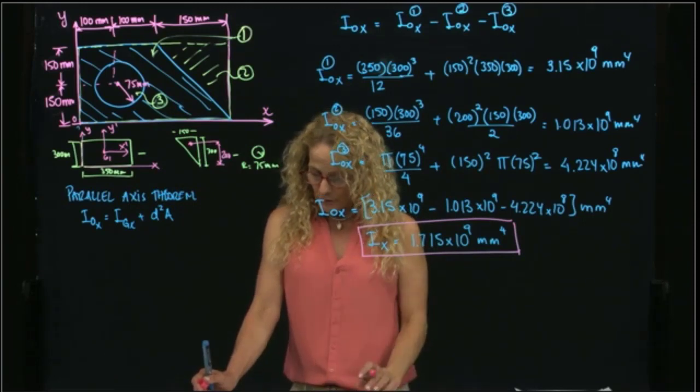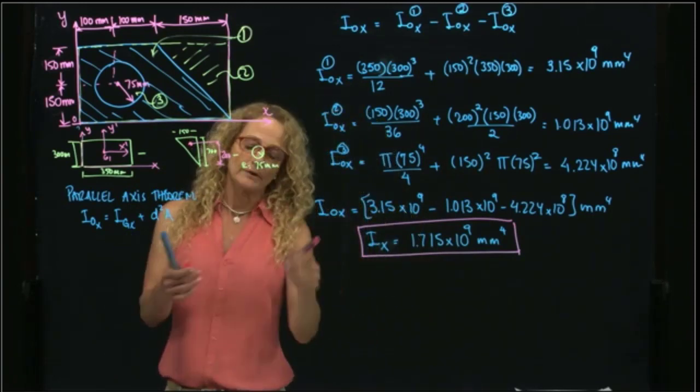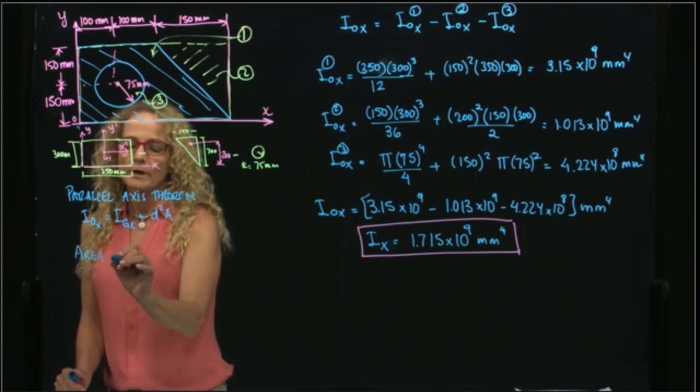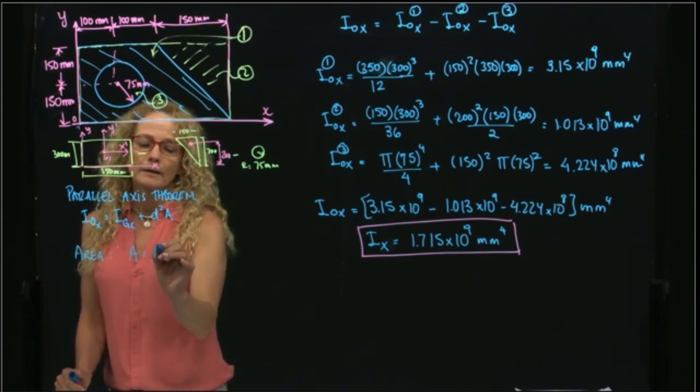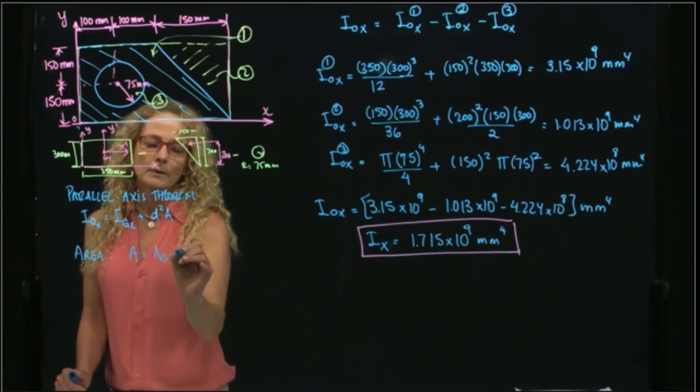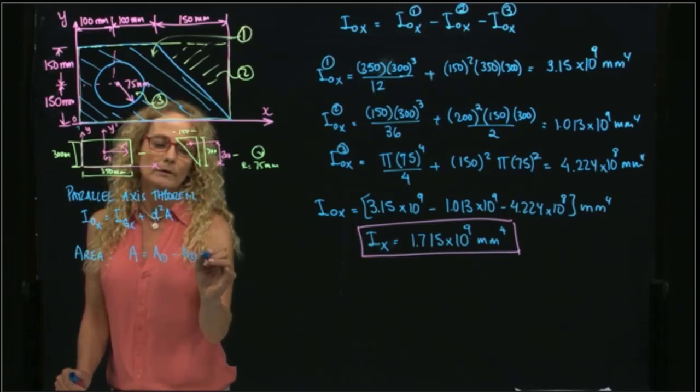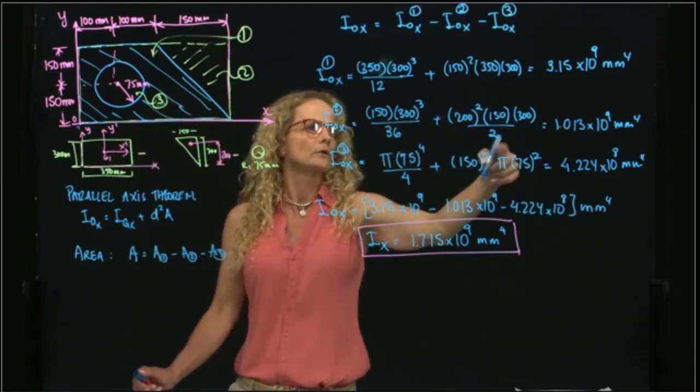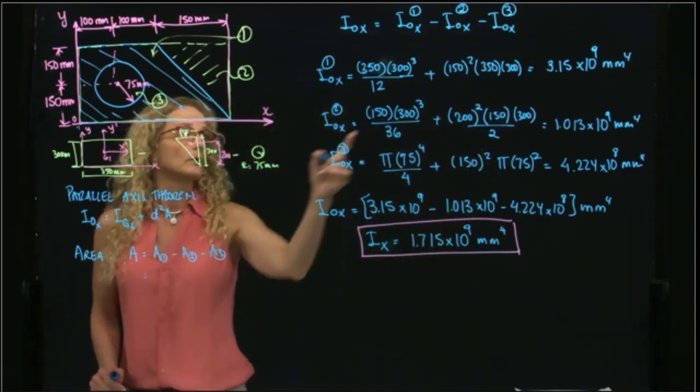And now we have to calculate the radius of gyration. For that we need the area. The area of that figure would be the area of the first figure minus the area of the second figure minus the area of the third figure. And we already know the area of each of those figures.